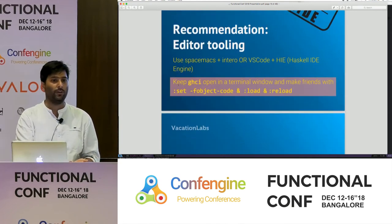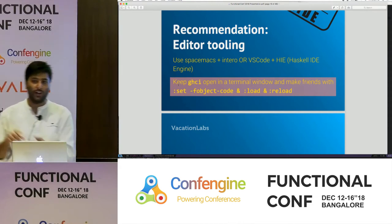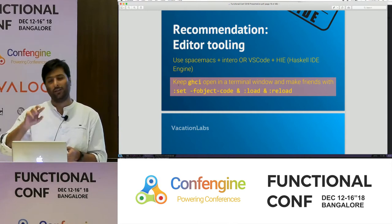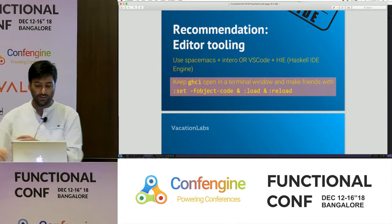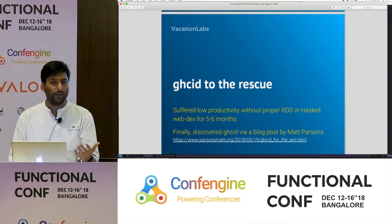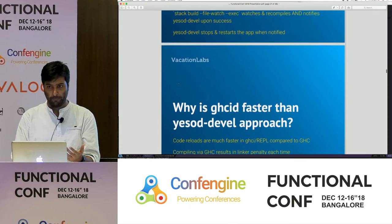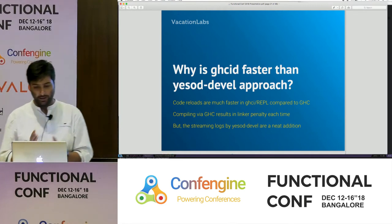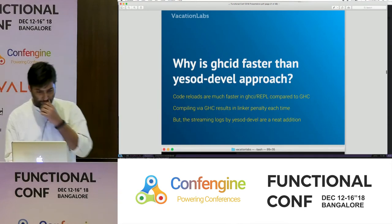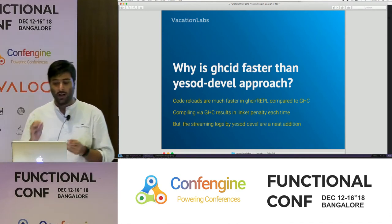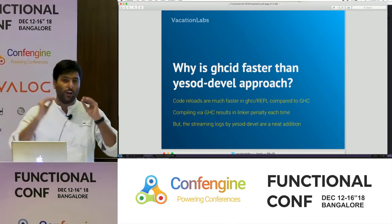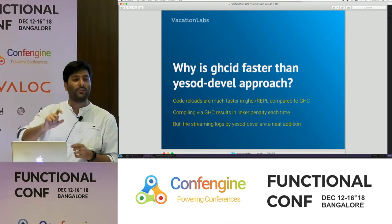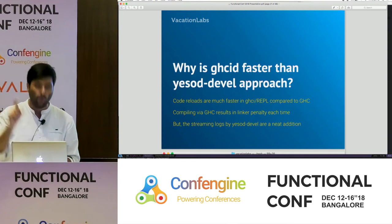Why is GHCID faster than Yesod Devil? Code reloads in the REPL are inherently much faster, made faster also by this setting: set -f object-code in your .ghci file. Object code compiles faster — it doesn't do a lot of optimization, but in the development environment that doesn't matter. Yesod Devil is calling the GHC compiler and building either an executable or the library portion of your Cabal project, which incurs the linker penalty every time. The linker in Haskell is slow. There are three linkers Haskell supports — LD, LDD, and GOLD — and for some reason the slowest one is the default. You can change the linker, but there's a power of defaults and you need to know about this.